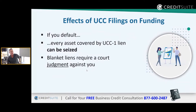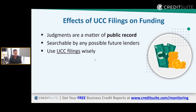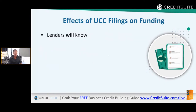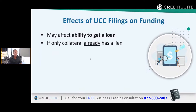How do UCC filings affect your ability to get funding? If you default, every asset covered by that lien can be seized by the lender. Blanket liens require a court judgment against you, and they can then come after all of your assets. Judgments are a matter of public record, searchable by any potential future lenders. UCC filings show up on your business credit reports and will affect your ability to get a loan if your only available collateral already has a lien against it.